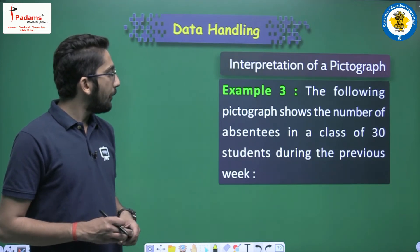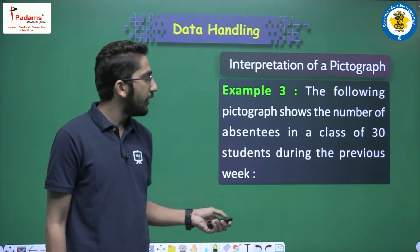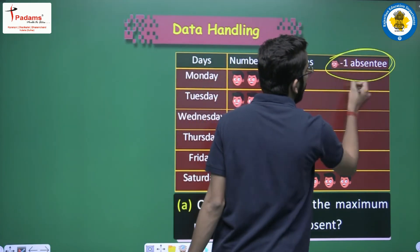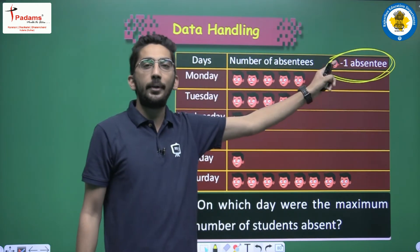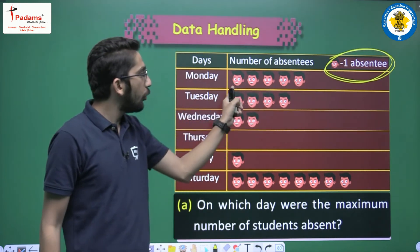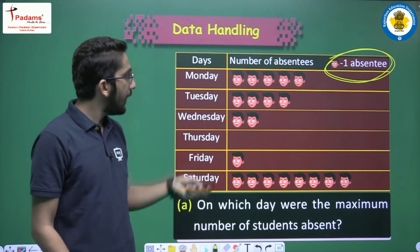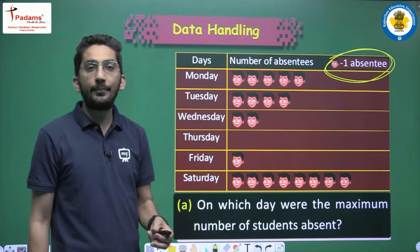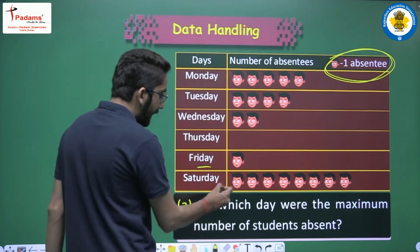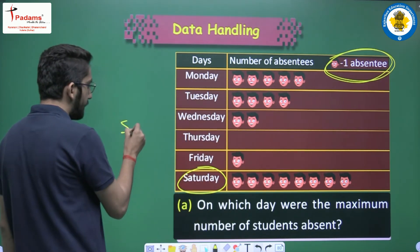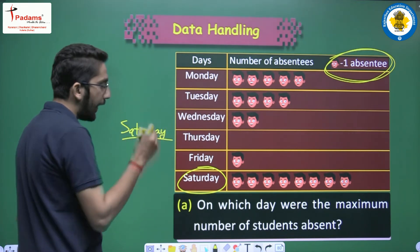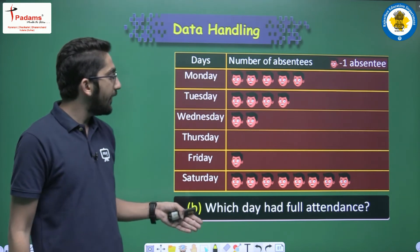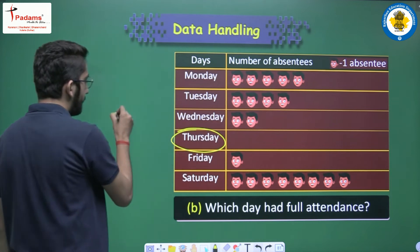The following pictograph shows the number of absentees in a class of 30 students during the previous week. One face represents one absentee. You will always need to check the scale — it tells you how many students or objects one image represents. Now answering the questions: on which day were the maximum number of students absent? You can directly answer without counting — Saturday. Saturday had the most absentees. Which day had full attendance? Full attendance means no absentees, and that is Thursday.